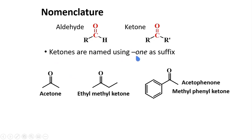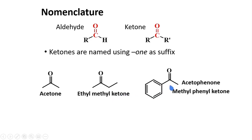Ketones are named using '-one' as a suffix. For common names, we call this acetone. This compound here contains a methyl group and an ethyl group attached to the carbonyl, so common naming uses alphabetical ordering — we call this ethyl methyl ketone. Manufacturers often name it starting from methyl first, so the common name can also be methyl ethyl ketone. This compound here is commonly named acetophenone or methyl phenyl ketone.